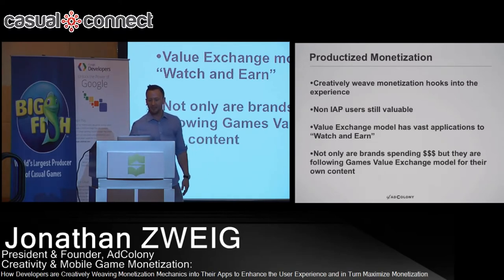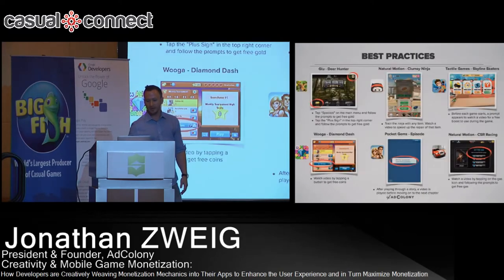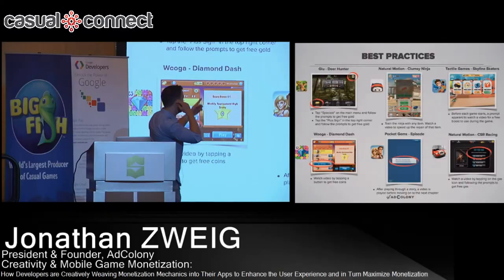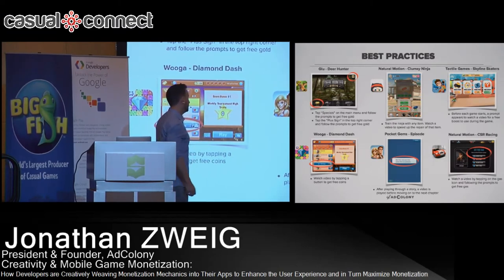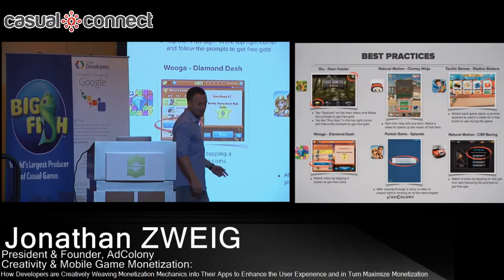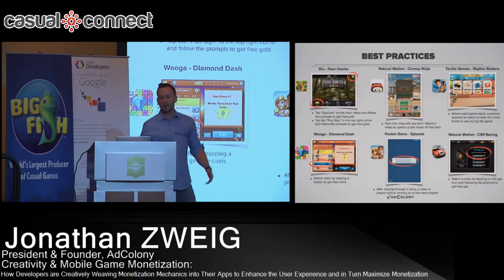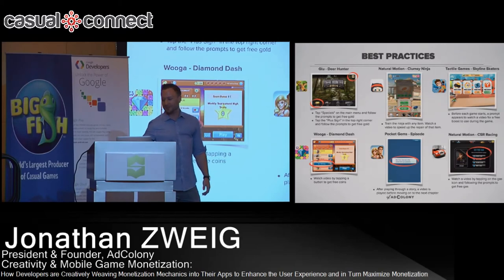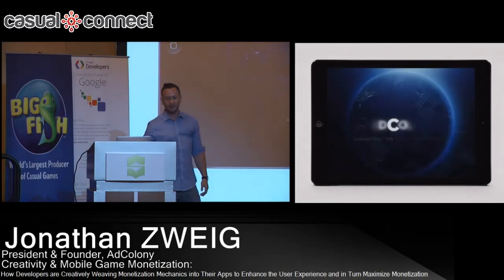I just wanted to show you a few of the brands that are working with Ad Colony. Here are some best practices first. In summary: Glue with Deer Hunter tapping on specials, Natural Motion with Clumsy Ninja to train the ninja with any item, Skyline Skaters to earn boosts in the game, Wooga with Diamond Dash — Wooga was voted Europe's number one indie game developer — watching videos to earn virtual currency, Pocket Gems, and Natural Motion. Just to give you an idea of the brands latching on to Ad Colony so that you don't just get other game developers advertising in your apps.